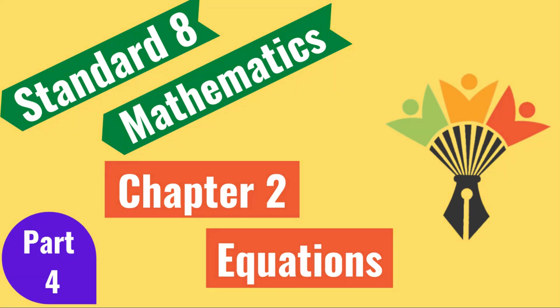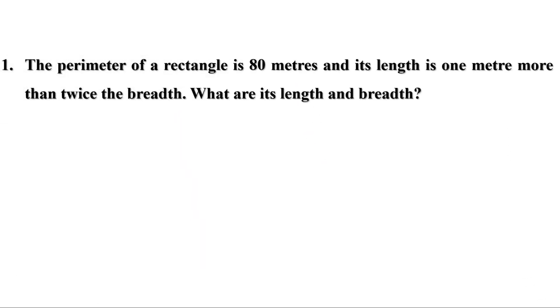Welcome to Maths Companion. In the last video we discussed the algebraic method. There was a homework — let us check the answer now. The perimeter of a rectangle is 80 meters and its length is 1 meter more than twice the breadth. What are its length and breadth?